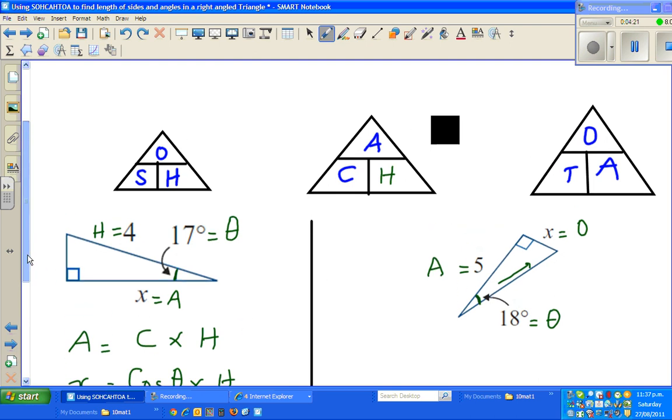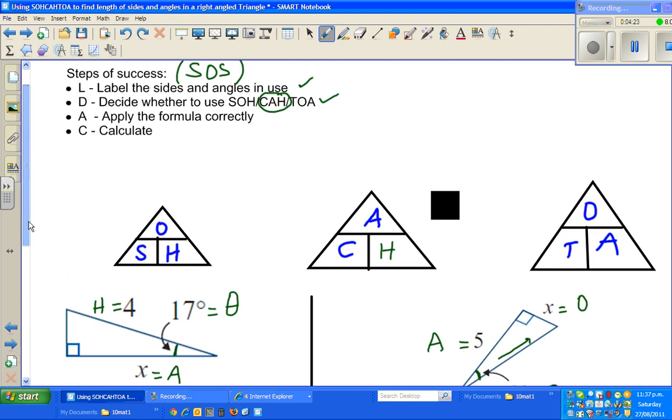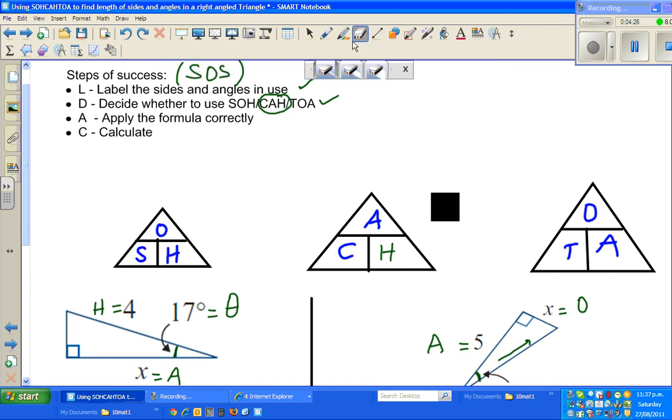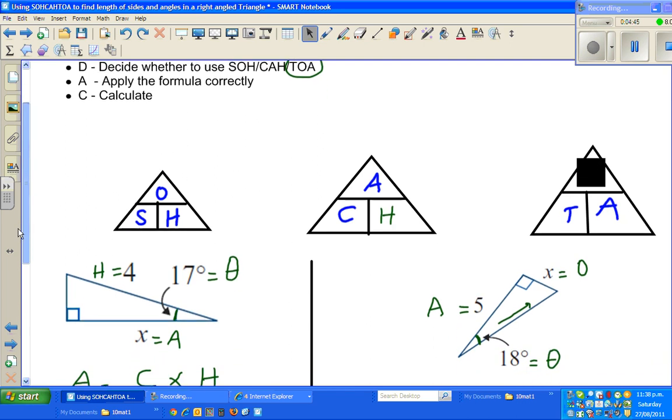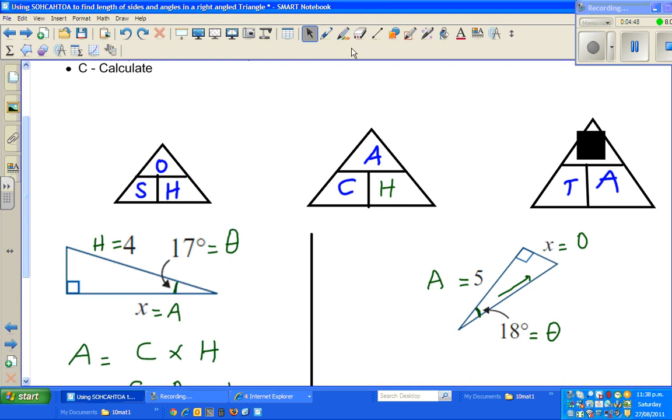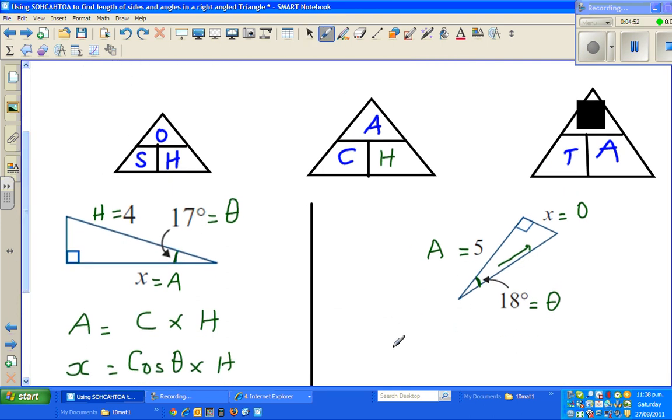Now you have to decide the formula. So I have done the labeling, now you have to decide the formula. Tell me which formula will I use or should I use. We are using O and A, so we use TOA. You want to find O, so the same thing, you cover that up. And then what is that you can see? You have to multiply T and A.